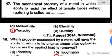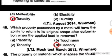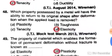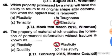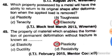The property possessed by a metal whereby it has the ability to return to its original shape after deformation when the applied load is removed is called elasticity. The property of a material which enables the formation of permanent deformation without fracture is known as plasticity.